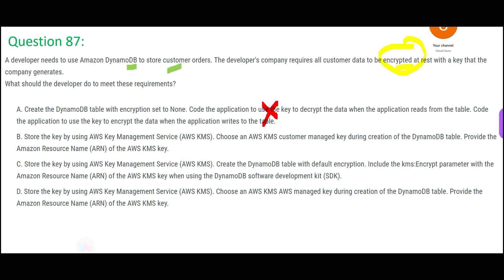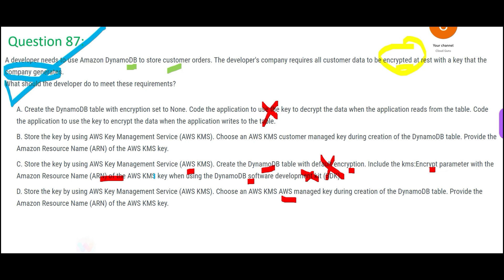Option C is clearly wrong — even though they use KMS, they then create a DynamoDB table with default encryption, which contradicts using KMS. It also mentions including an encrypt parameter with the SDK, but there is no need for the SDK here. So C is wrong. Now B and D are almost identical except one uses a customer managed key and the other uses an AWS managed key. The question clearly states the company wants to generate the key themselves, so customer managed key is the correct option, and AWS managed key is not.